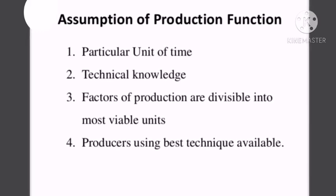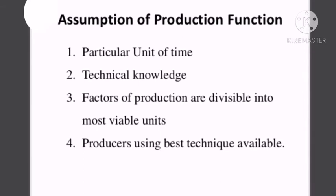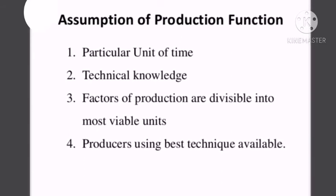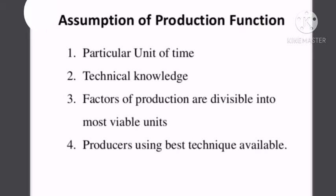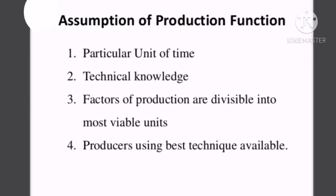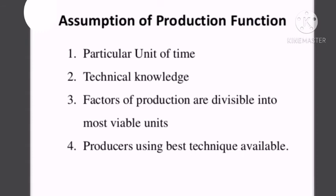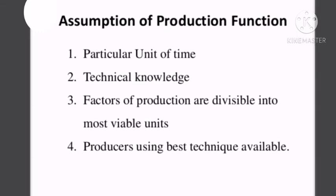Third, factors of production are divisible into the most viable units — that is, the input can be divided and used in the most economical units. Fourth, producers use the best technique available, meaning inputs are used at their maximum level of efficiency.